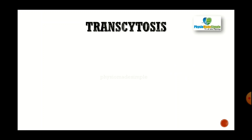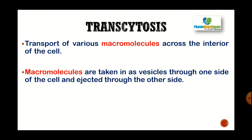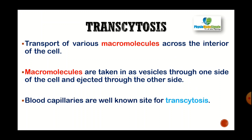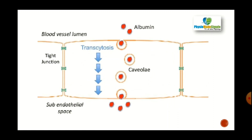Transcytosis is the transport of various macromolecules across the interior of the cell. Macromolecules are taken in as vesicles through one side of the cell and ejected through the other side. Blood capillaries are well-known sites of transcytosis. The material is first taken inside as vesicles and then released to the subendothelial space. These are the three types of special transport mechanisms.